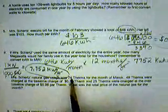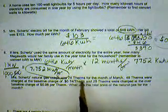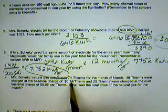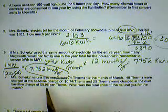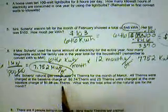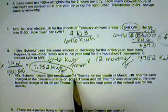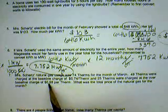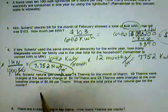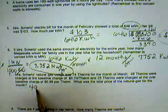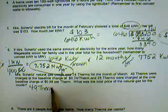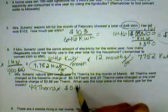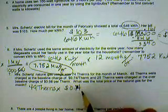Next question. 74 therms per month, and it's a tiered charge — two tiers. 49 therms are at 74 cents a therm, and 25 therms are at 98 cents per therm. They often do this on a bill — as you use more, it costs more. It's a way to incentivize people to use less energy. So we're going to take the first 49 therms at 74 cents per therm.